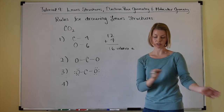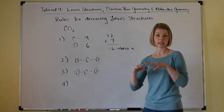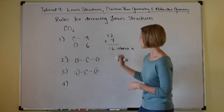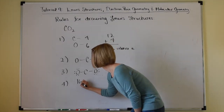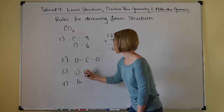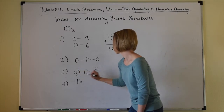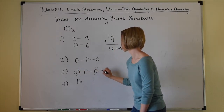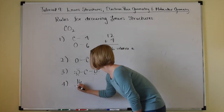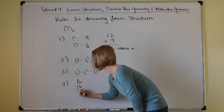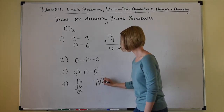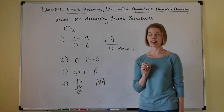Rule number four: place any leftover electrons on the central atom. We had 16 to work with. We're currently showing eight for this oxygen and eight for the other oxygen — eight and eight is 16, so we have zero left over. Nothing to do for rule number four.